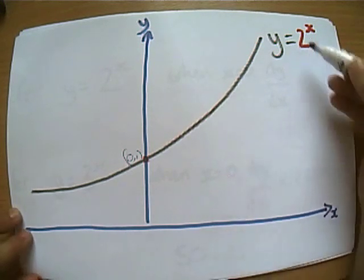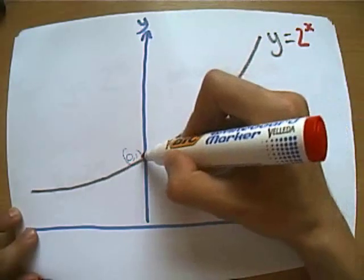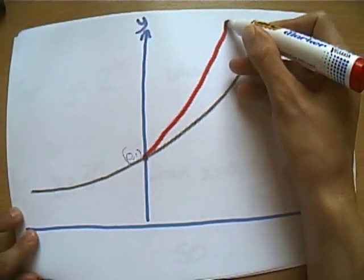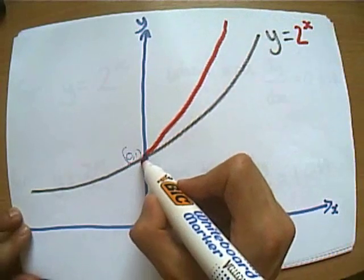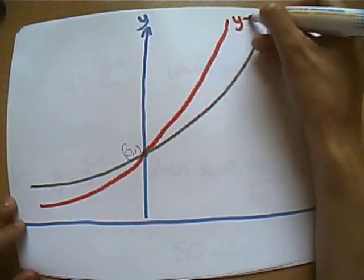So I'm going to pause now, give you a chance to think about that. What will the graph y equals 3^x look like compared to 2^x? And hopefully you're going to be saying, well, because it's got a bigger base number, it's going to get steeper more quickly as we go from here.